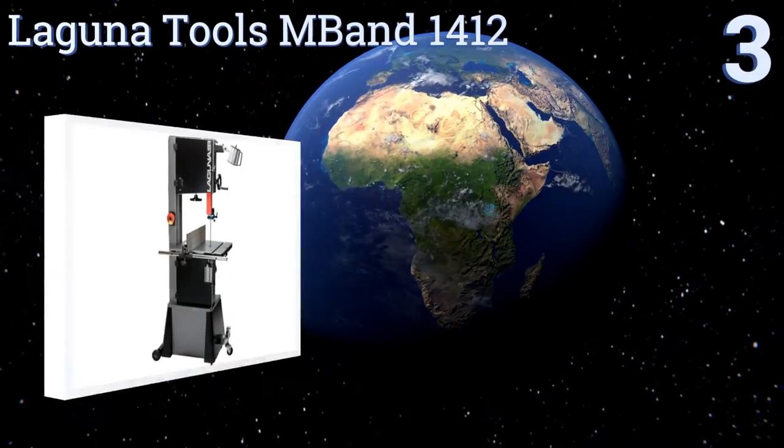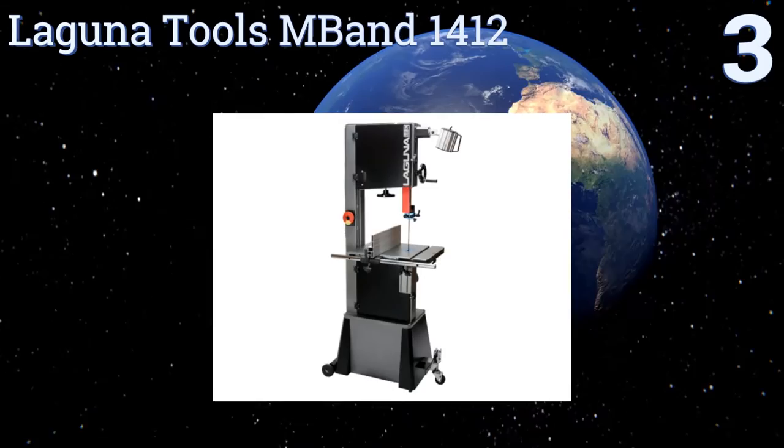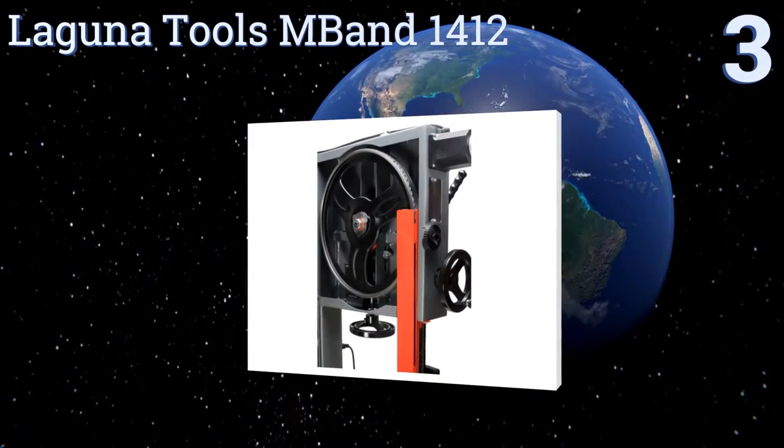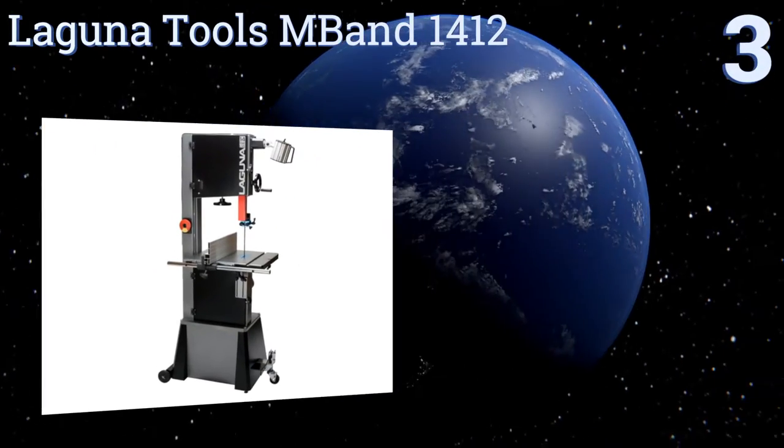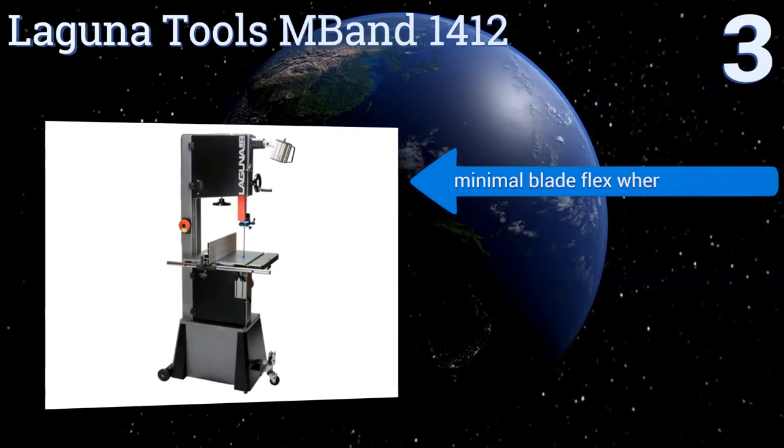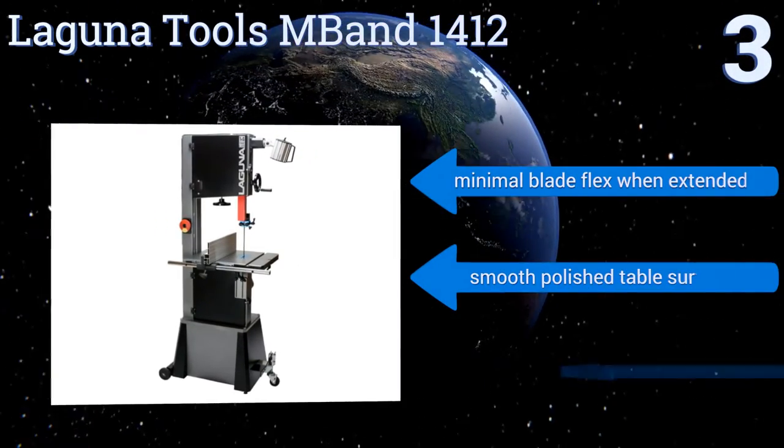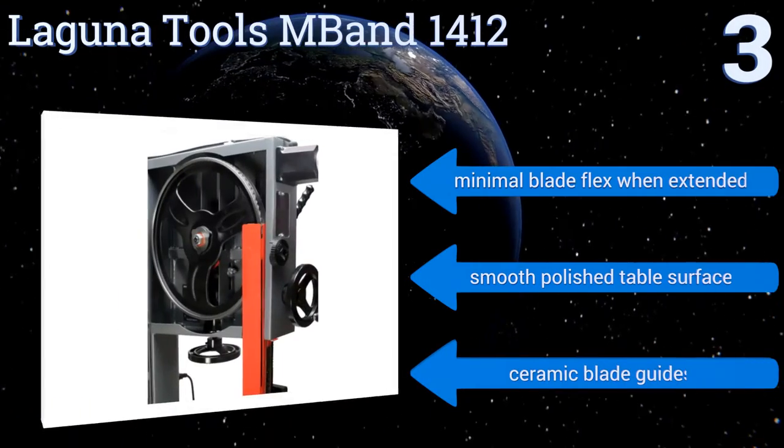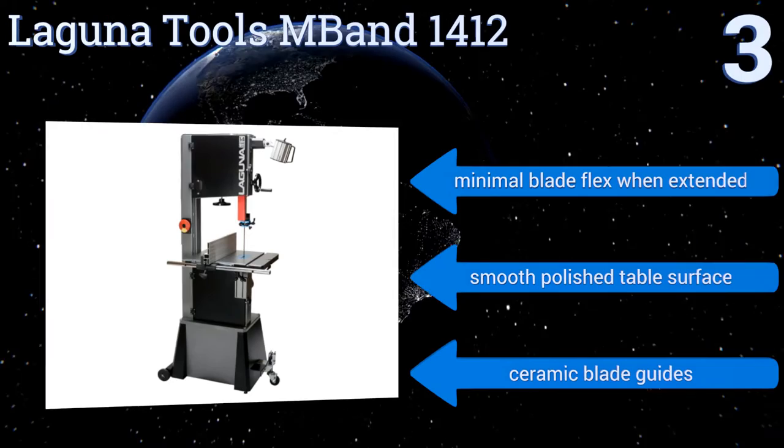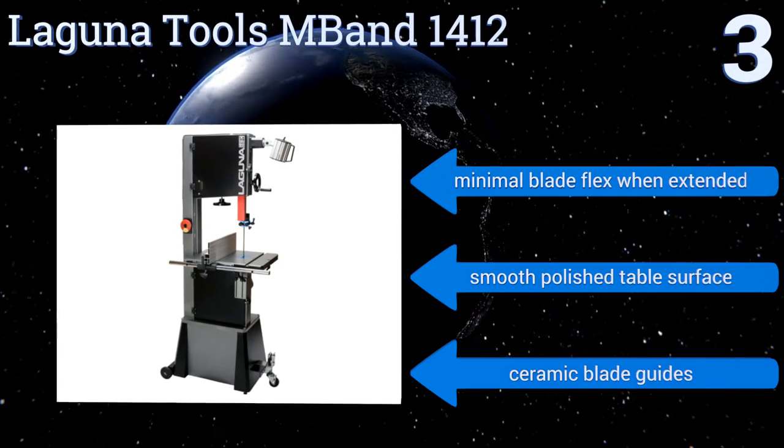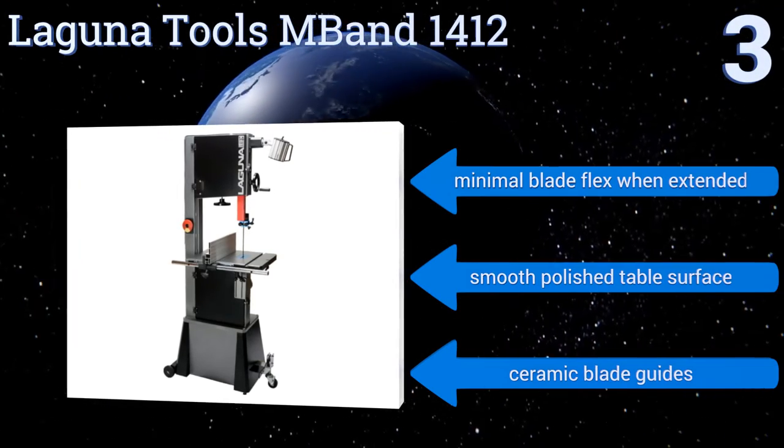Nearing the top of our list at number 3, the industrial-quality Laguna Tools M-Band 1412 offers incredible rigidity and a vibration-free performance, thanks to the fine engineering of its pyramid-shaped spine and oversized trunnion. It also has wheels on the bottom for easier portability. There's minimal blade flex when extended, and it comes with a smooth polished table surface and ceramic blade guides.